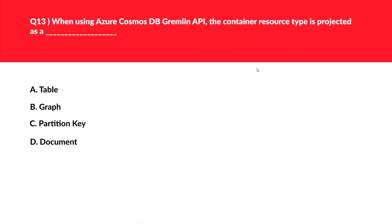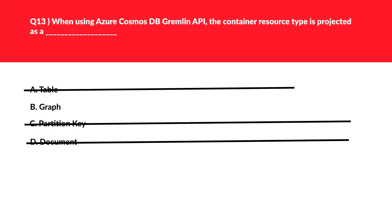This question looks like a no-brainer — Gremlin API is mentioned. Whenever you see Gremlin API, the answer is graph. Don't consider other options; they're all distractors. Graph is the correct option.